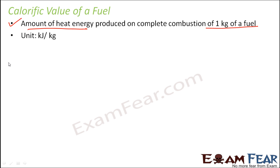The unit in which calorific value is measured is kilojoules per kg. Why kilojoules per kg? Joule is the unit of energy and kg is the unit of mass. So the amount of fuel burned is measured in kg and the energy produced is measured in joules, therefore the unit is kilojoules per kg.